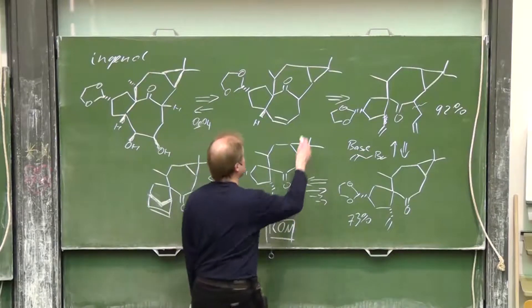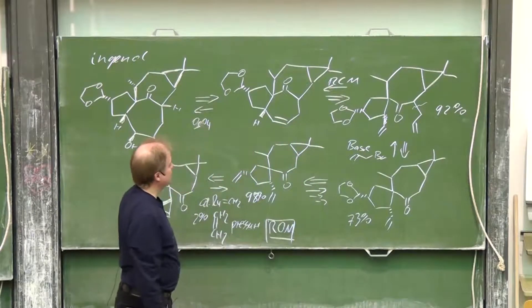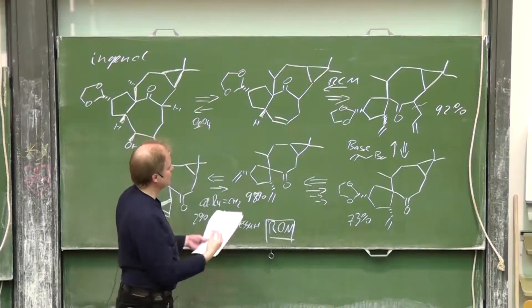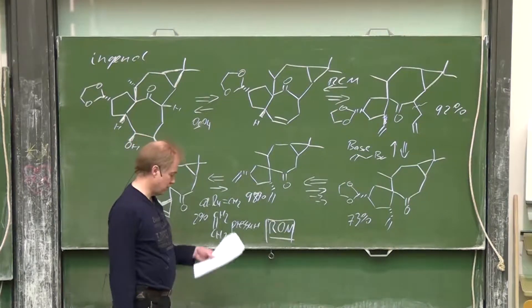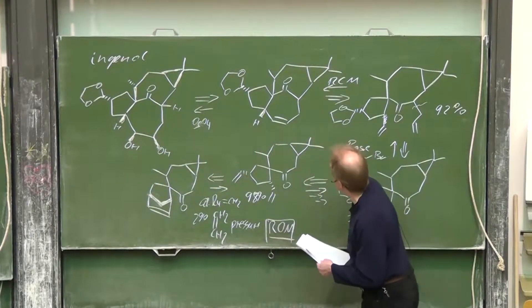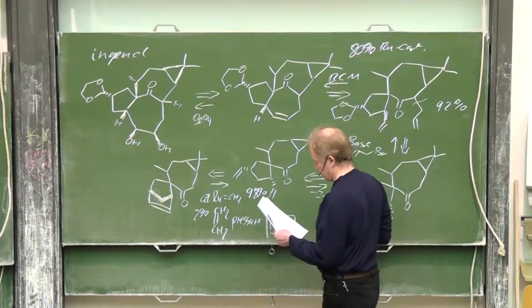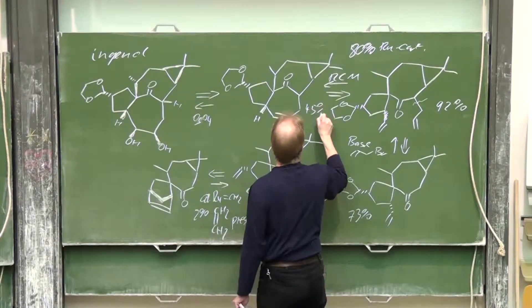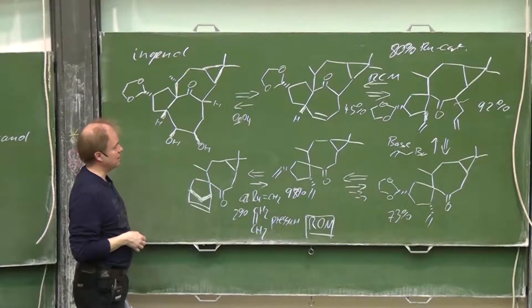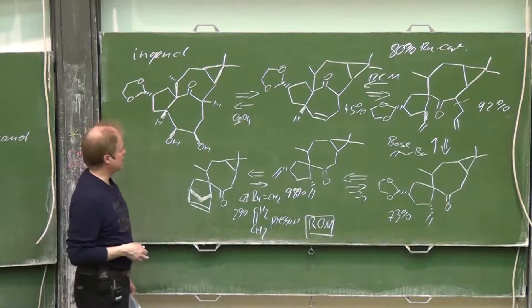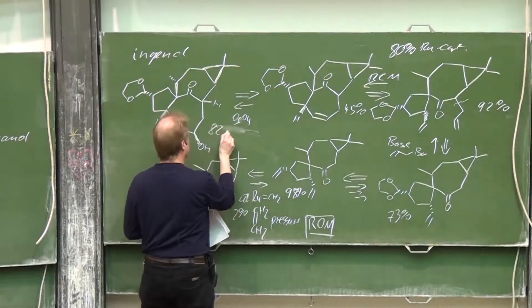And here, this is the ring closing metathesis. Forming this somewhat strained ring system was obviously not that easy. They applied catalyst loading of 80% ruthenium catalyst and got, well, 45% yield of that. Nevertheless, elegant, not efficient but elegant of course. And this osmium tetroxide oxidation, that works nicely, 82%.